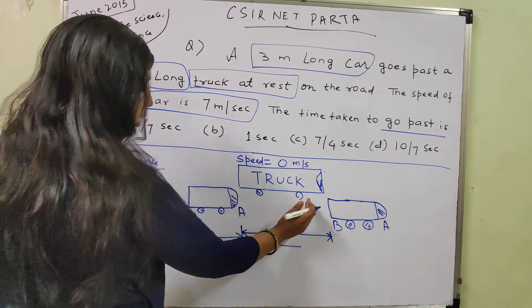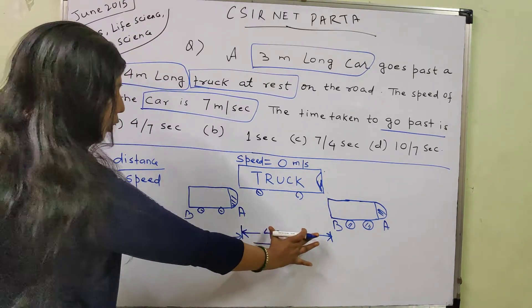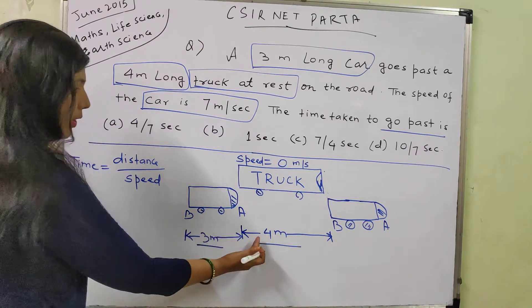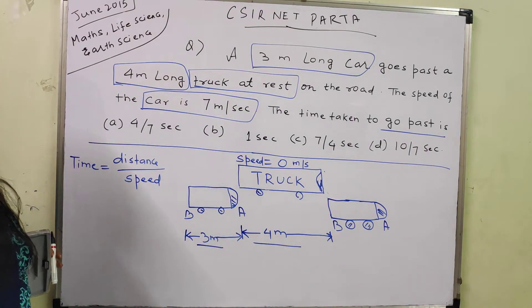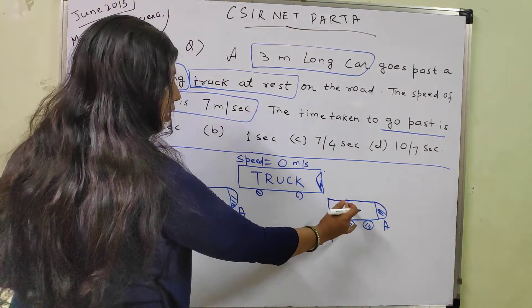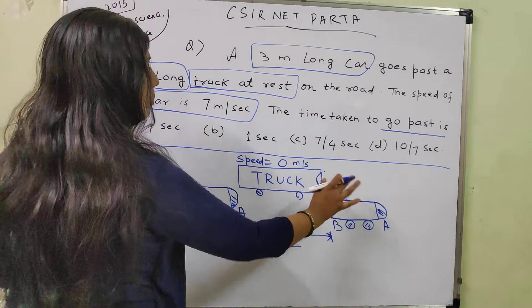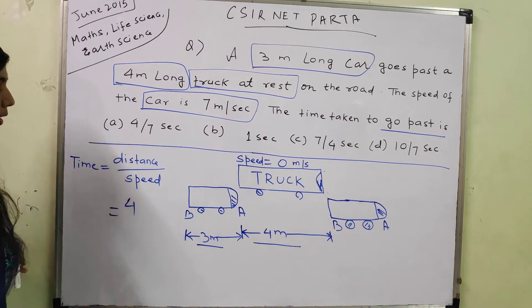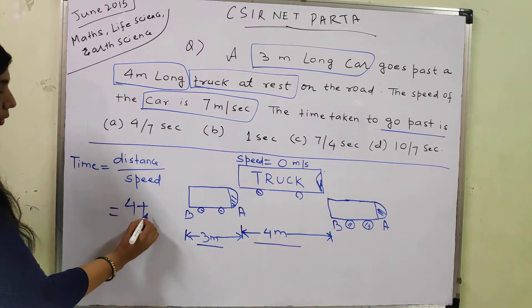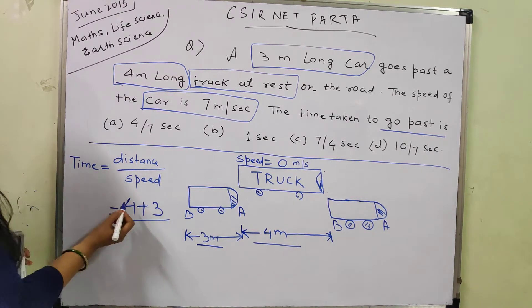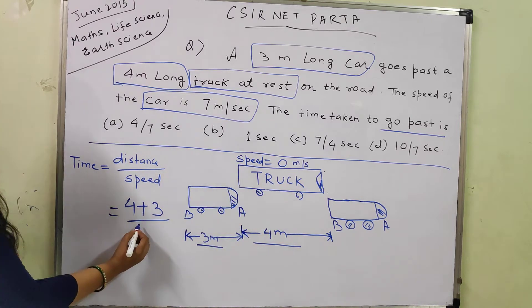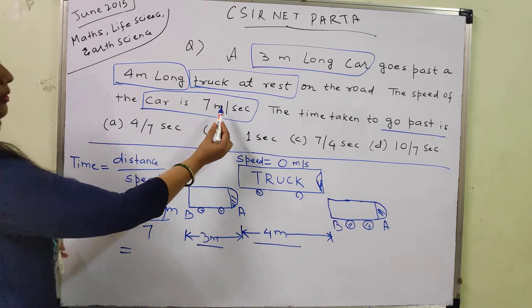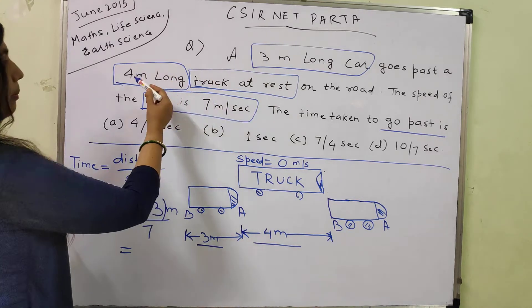So the distance — length of truck is 4 meters and length of car is 3 meters. When the car is crossing the truck, the total distance covered will be 4 plus 3 meters, and then the car will have gone past the truck. Total distance is equal to the length of the truck plus the length of the car, divided by the speed of the car because the car is moving. Speed of car is given as 7.